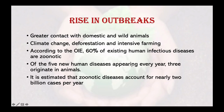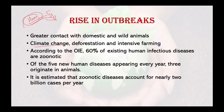Why is there a rise in outbreaks? As the human population expands, it results in greater contact with domestic and wild animals, providing more opportunities for diseases to pass between species. Climate change, deforestation, and intensive farming further disrupt the environment, which in turn affects both human and animal health, since all three — human health, animal health, and the environment — are interdependent.